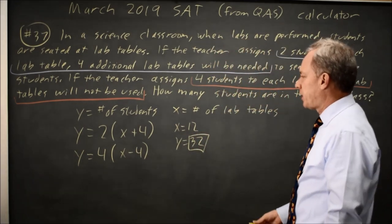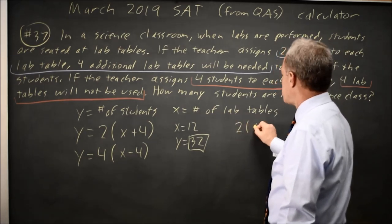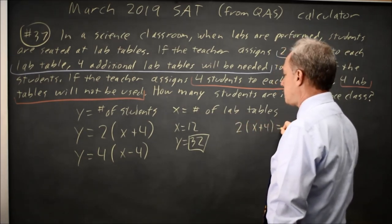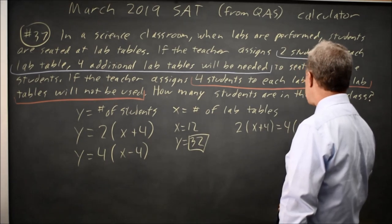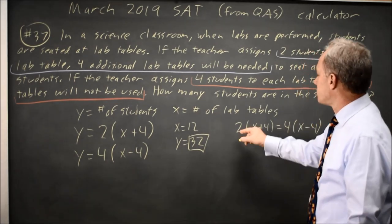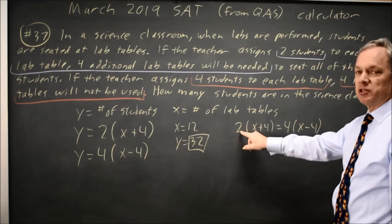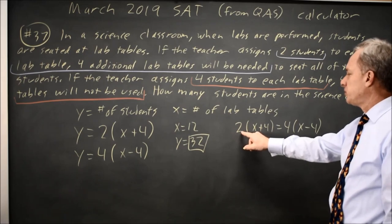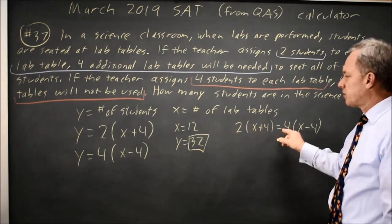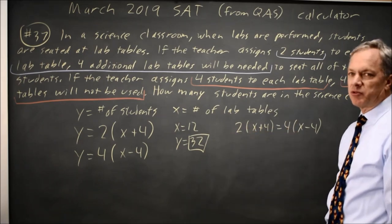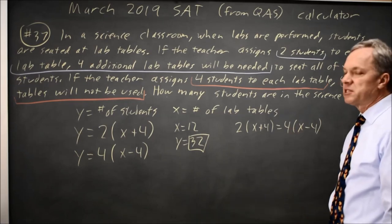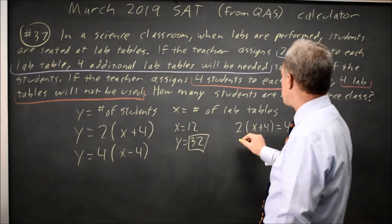Alternatively, I could solve this by hand. 2(x+4) equals 4(x-4). Because I know the number of students with two per lab table would be 2(x+4), and the number of students with four per lab table would be 4(x-4). And it's the same number of students. Those are equal.